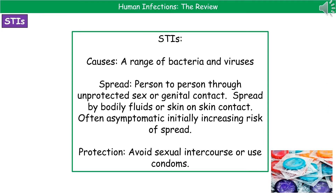The third type of human infection is sexually transmitted infections, or STIs. They're caused by a range of different bacteria and viruses, and spread from person to person through unprotected sex or genital contact. They can also spread via bodily fluids or skin-on-skin contact. Importantly, there are often asymptomatic periods — times where you don't show any symptoms — which increases the risk of spread because people don't think there's anything wrong and don't take the steps they should.